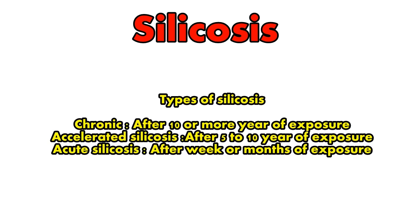So what are the types of silicosis? There are three types: chronic, accelerated, and acute. Chronic occurs after 10 or more years of exposure to silicon dioxide, accelerated silicosis is after 5 to 10 years of exposure, and acute silicosis is just after a week or month of exposure.